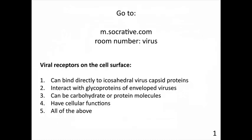Clicker question: viral receptors on the cell surface — which applies? One: can bind directly to icosahedral virus capsid proteins. Two: interact with glycoproteins of envelope viruses. Three: can be carbohydrate or protein molecules. Four: have cellular functions. Five: all of the above. 97% of you said all of the above, which is the correct answer. All of these things are right — you have to watch when there's an 'all of the above' option.